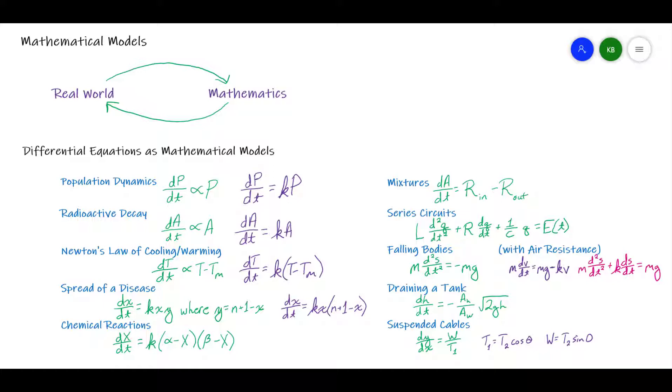So the goal of mathematical modeling is to take a real-world problem, to make some assumptions and define some variables, and figure out the relationship between these things we're interested in, to develop a mathematical model, which takes us over into this mathematics realm. Now the mathematics realm has equations that we can solve.